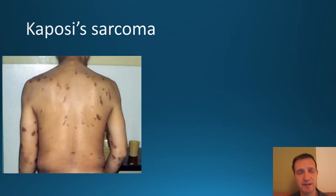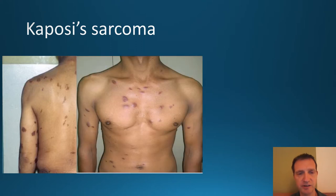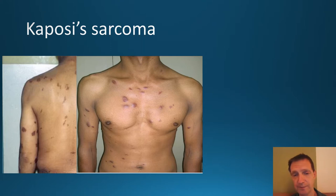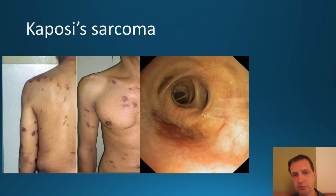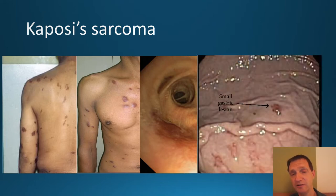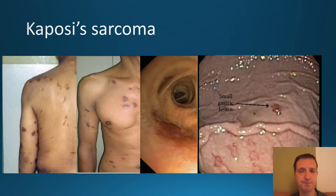Kaposi's sarcoma typically presents on the skin as purplish patches that can be spread across various parts of the body — the face, chest, back, genitals, and legs. It can also occur within the body. In this bronchoscopy image you can see a Kaposi's sarcoma lesion at the seven o'clock position. It can also occur in the gut — this is a visceral Kaposi's sarcoma, with arrows pointing to the lesion.